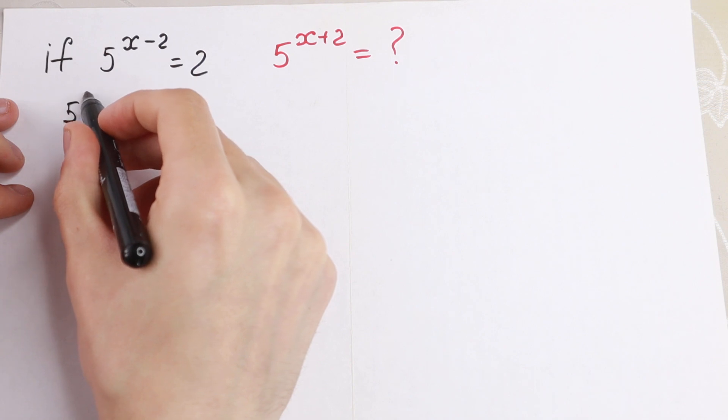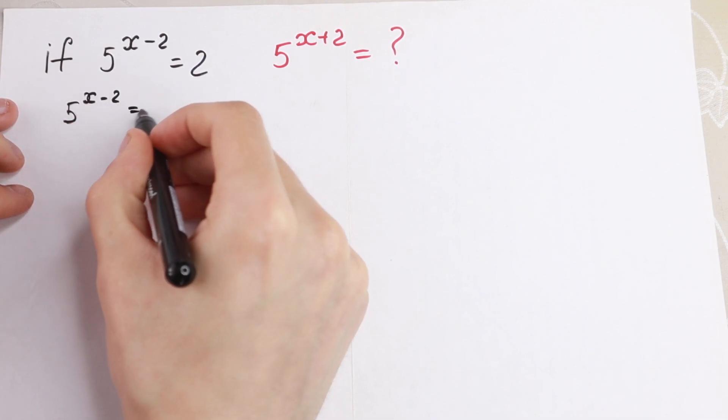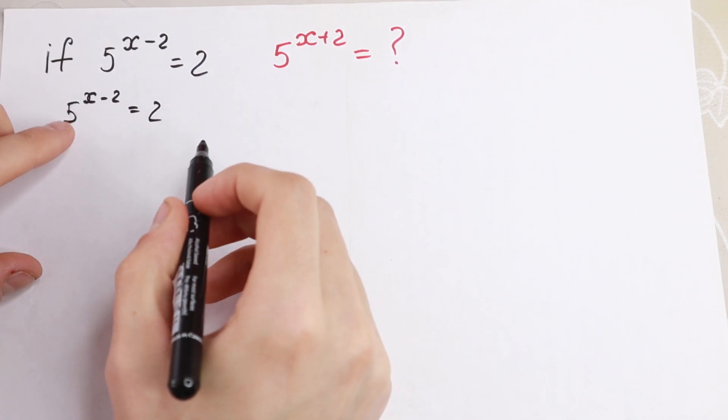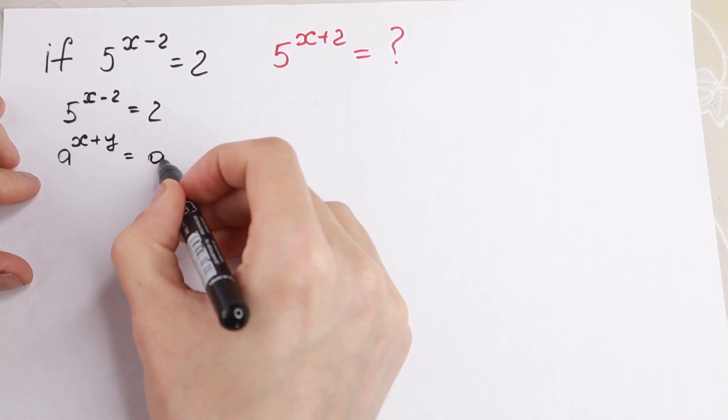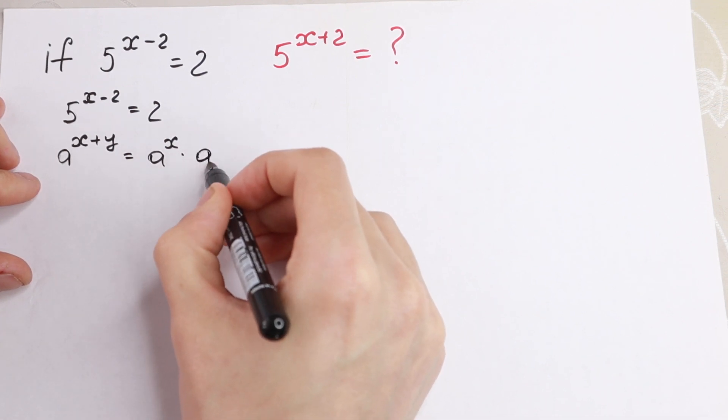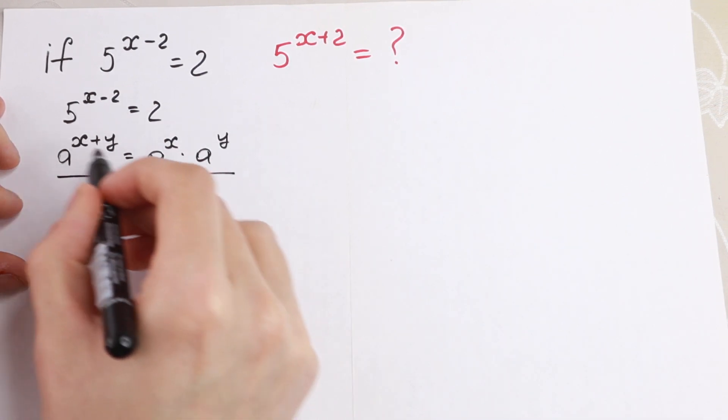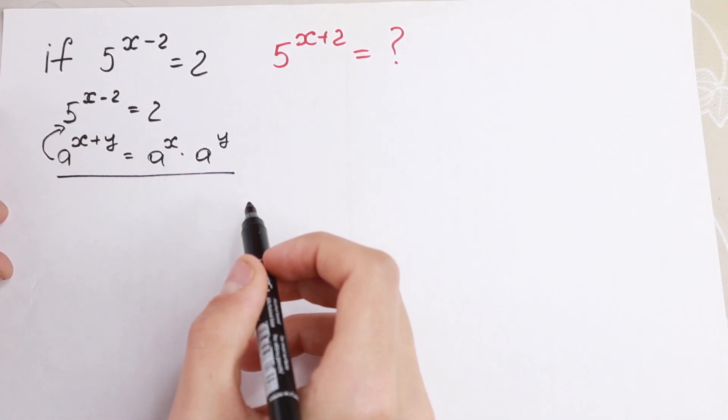5 to the power x minus 2 equals 2. We know that if we have a to the power x plus y, we can write it as a to the power x times a to the power y. So this is the rule and we can use this rule right here in this case.